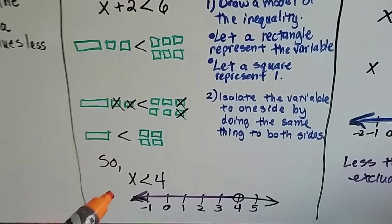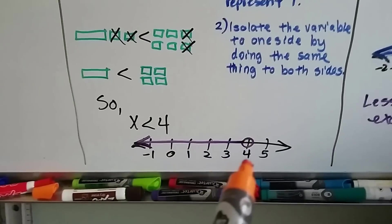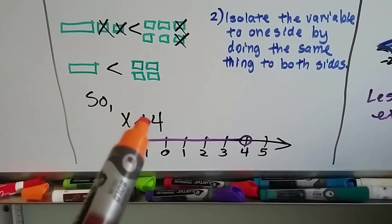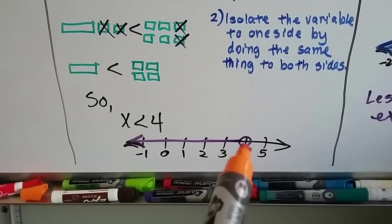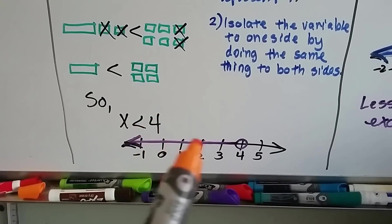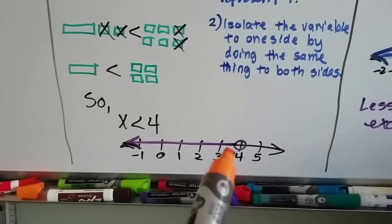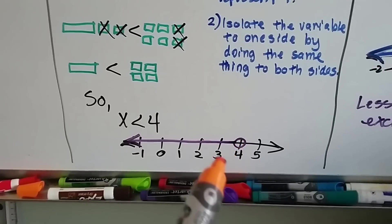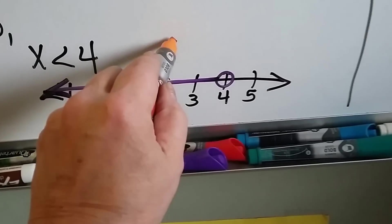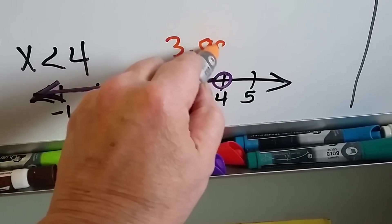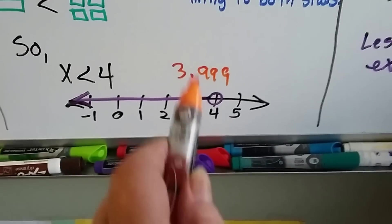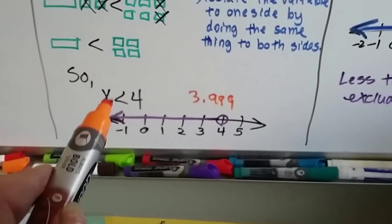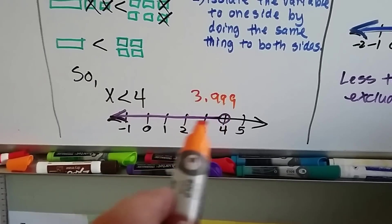I used models to do it. On a number line to graph it, x is less than 4, so it could be 3.999, right? It's just not 4. So I was able to go all the way up to the 4 but not include the 4, because the answer could be 3.999, like just under the 4, it says it's less than 4. So it could be this.